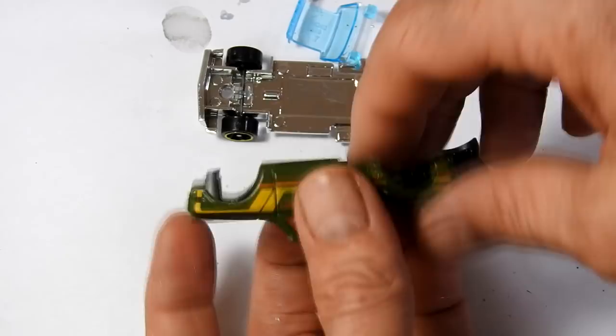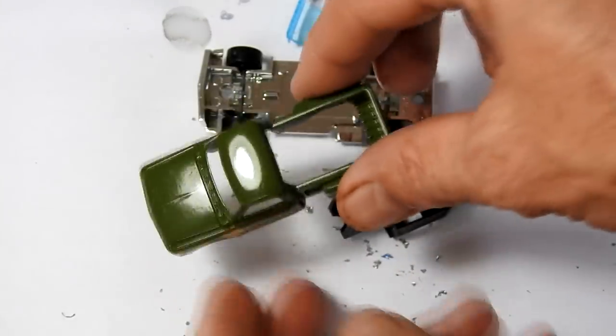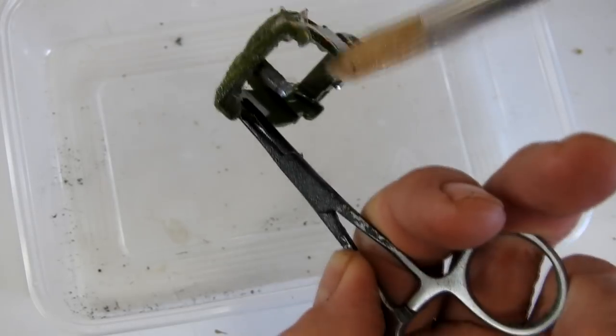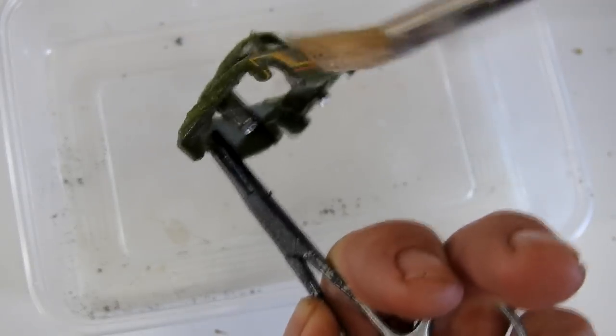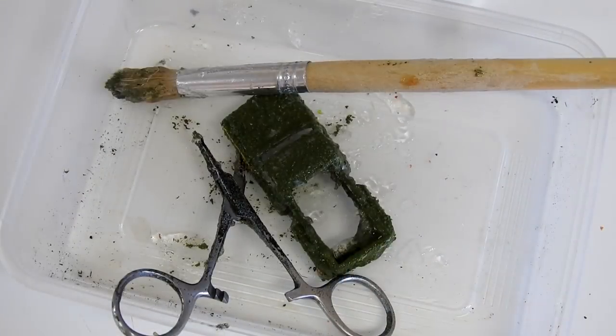Okay, so there's our little cars apart. I'll use some paint stripper now to remove the paint off of the Chevy casting.